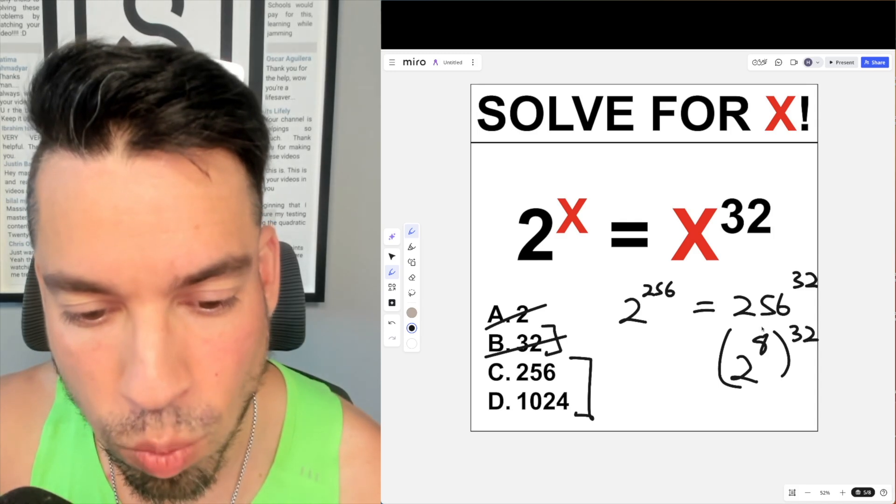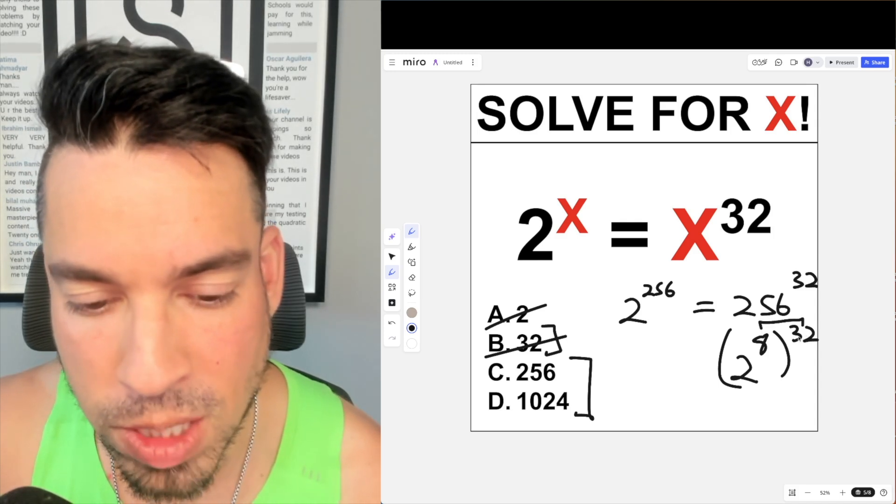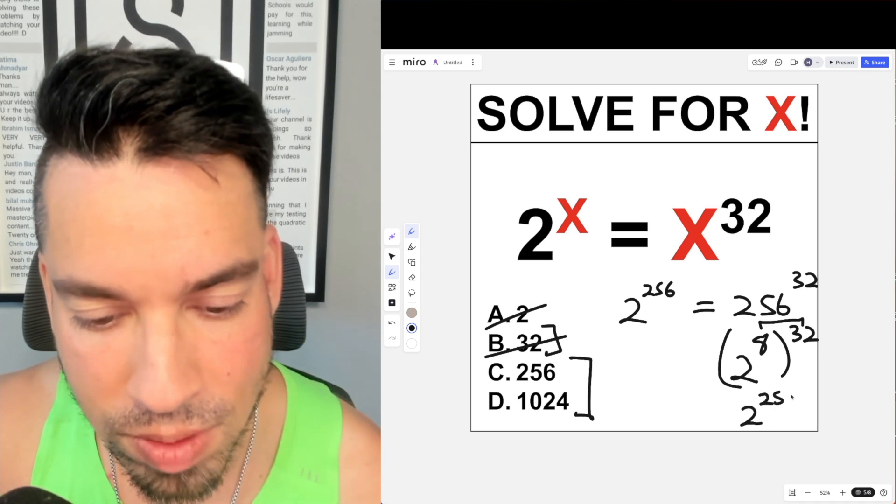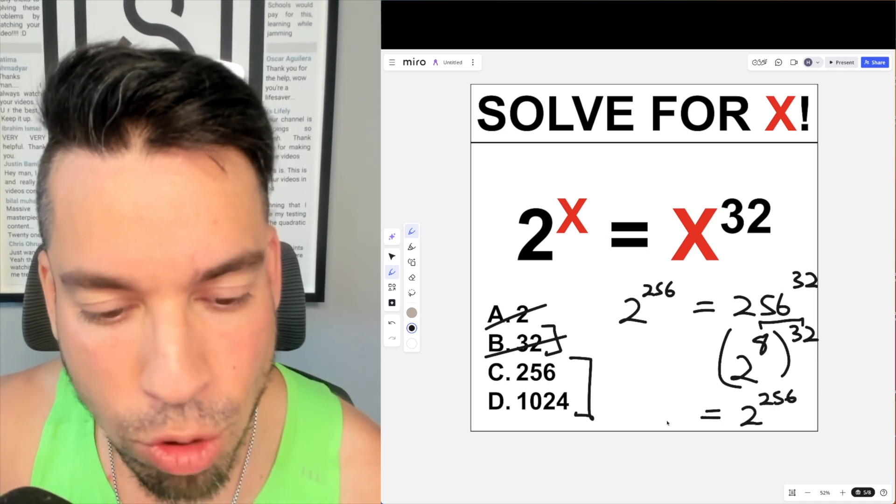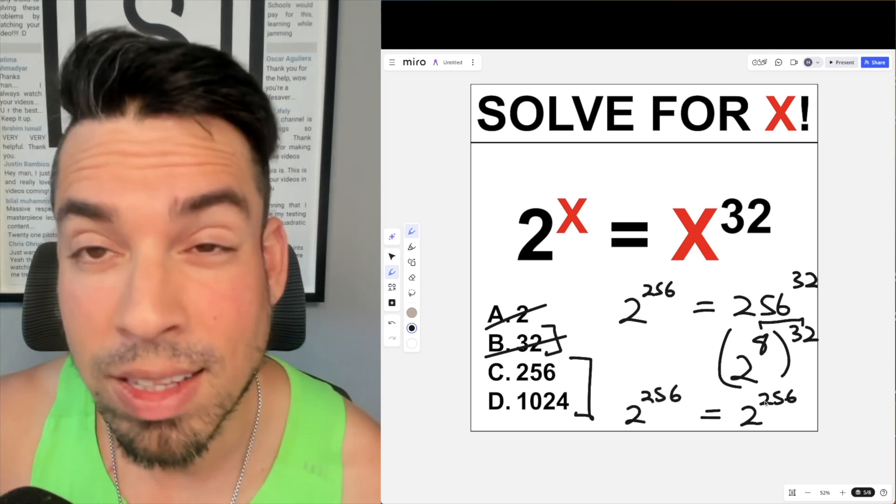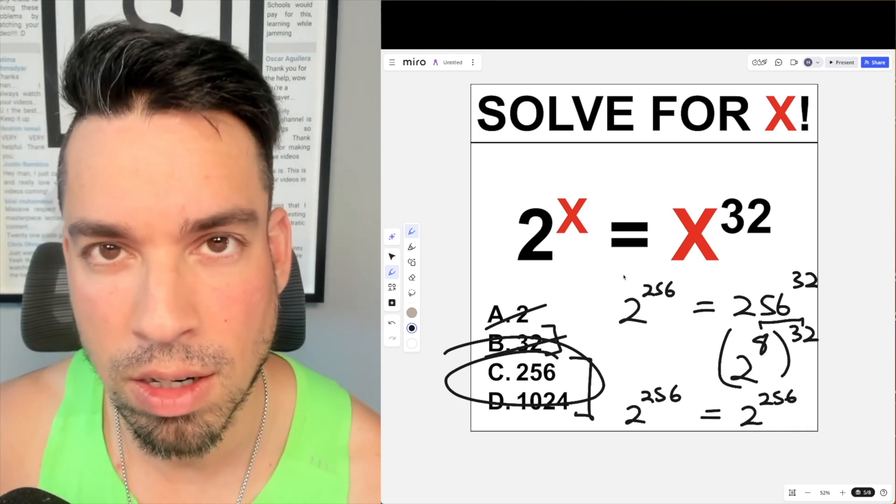So now we can rewrite this as 2 to the eighth to the 32. Well, now to combine these exponents, I say the floating exponents means they're going to multiply to simplify. Eight times 32 is 256, and then what we have is 2 to the 256 equals 2 to the 256, which means this satisfies the equation. C is the winner. Done.